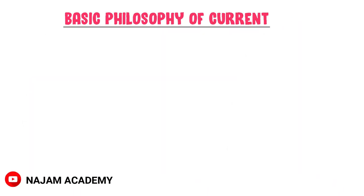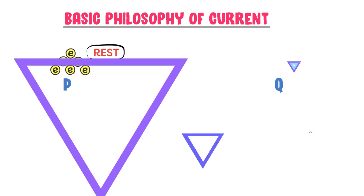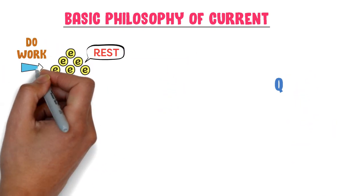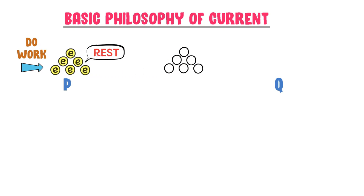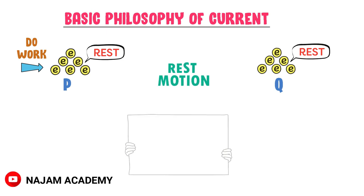Let's consider two points P and Q. Let there be five electrons present at point P. These charges are at rest or stationary at point P. I do some sort of work on these charges and they move to point Q, where they stop again. From this example, we learn that charges may remain at rest or may remain in motion.